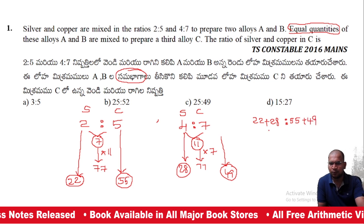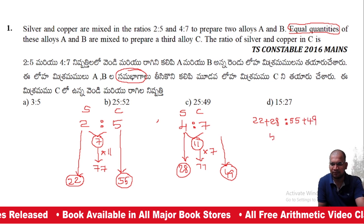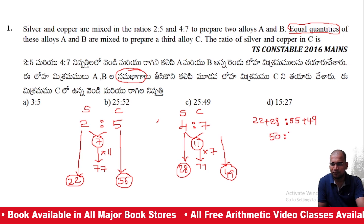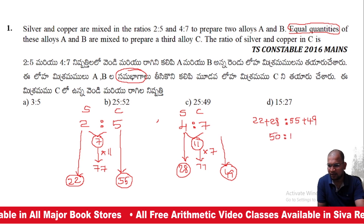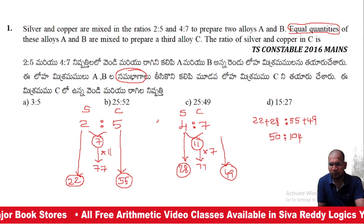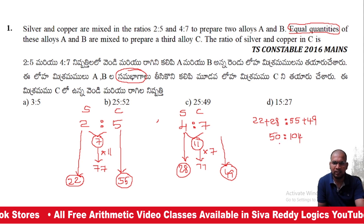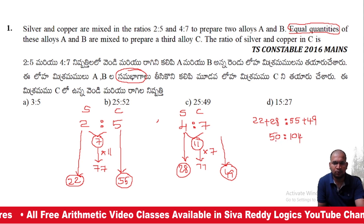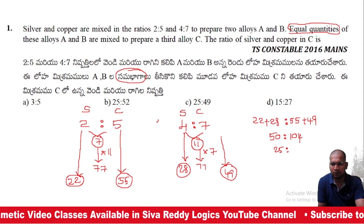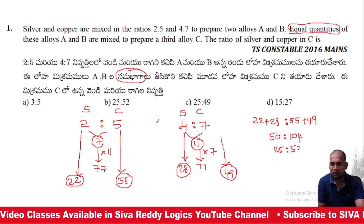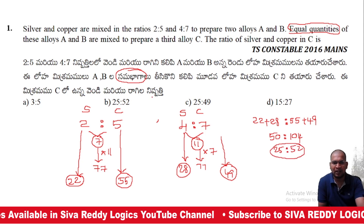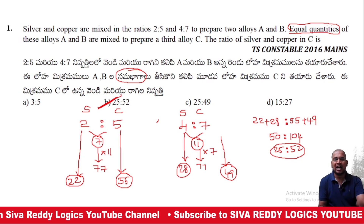Now 22 + 28 = 50 (silver), and 55 + 49 = 104 (copper). Simplifying, the ratio is 25:52. So the answer is Option B.